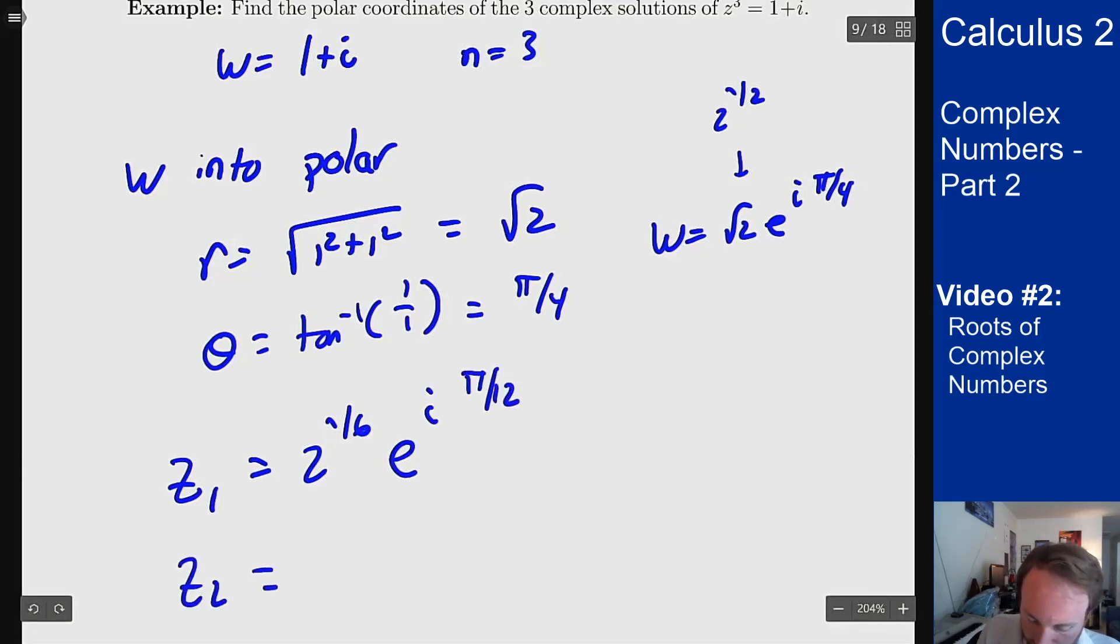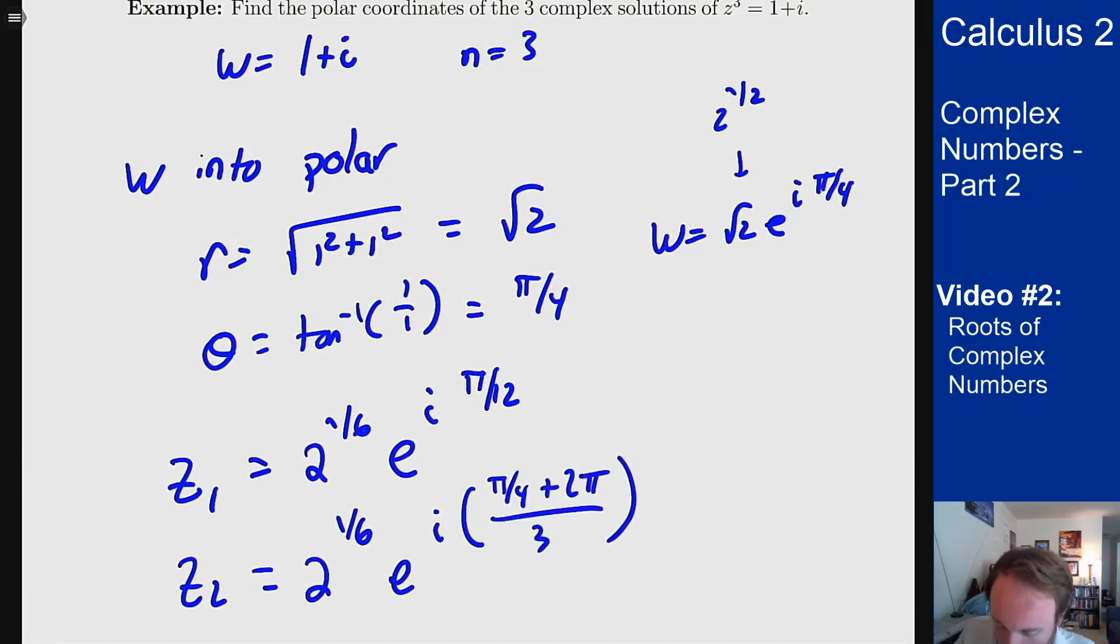z2 is going to be 2 to the 1 sixth e to the i, now it's pi over 4 plus 2 pi divided by 3. I shift by 3, I shift by 2 pi on top gives me a pi over 12 plus a 2 pi over 3. 2 pi over 3 is 8 pi over 12.